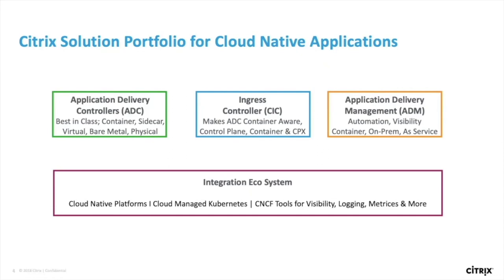The fourth and final item is integration with the ecosystem, which we consider a key part of successful deployment. We focus on three key areas: cloud-native platforms like Red Hat and Pivotal; cloud-managed Kubernetes like GKE, AWS, and Azure Kubernetes; and integration with tools you're already using, including CNCF and open-source tools for logging, visibility, and metrics.